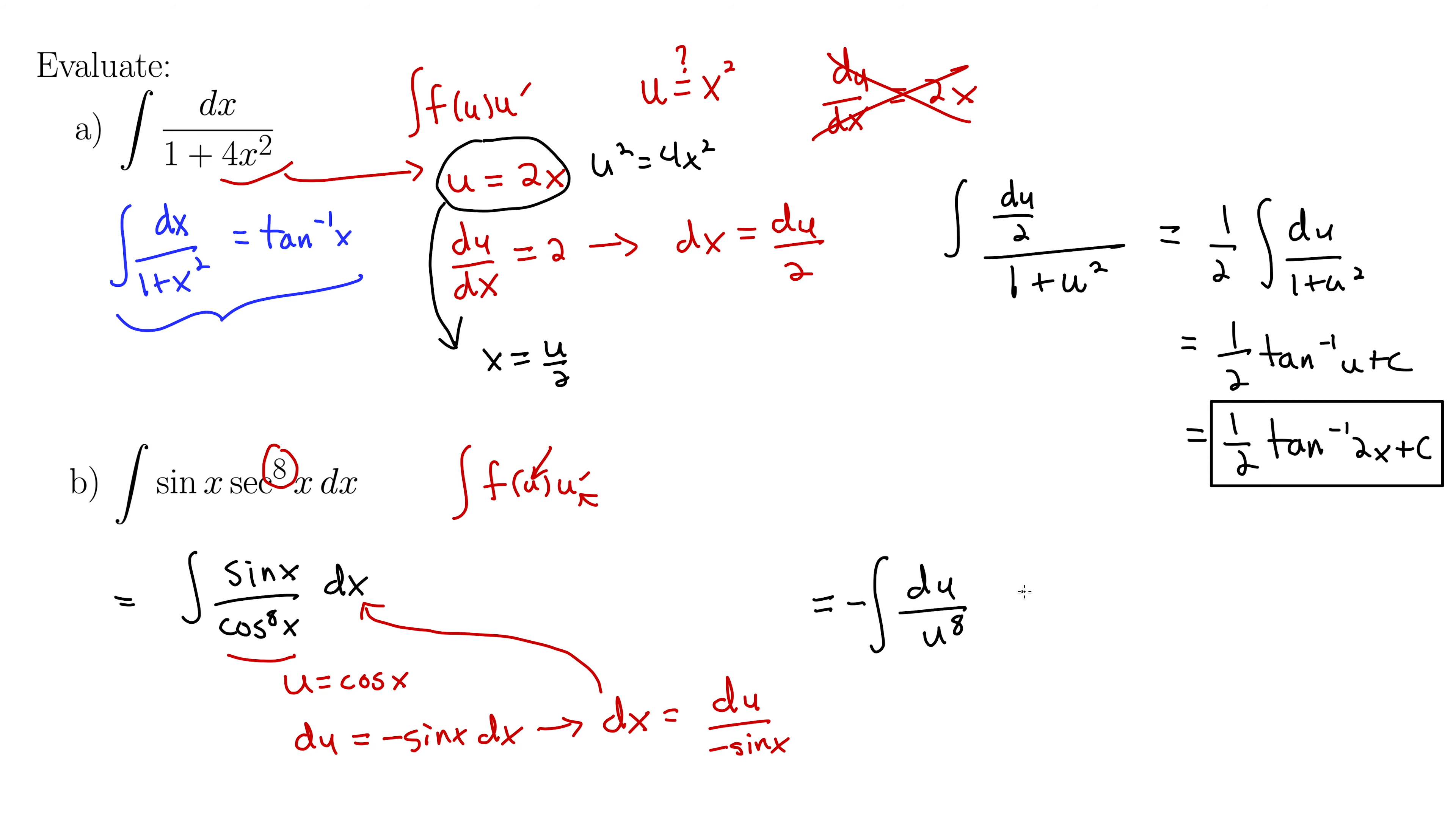Well now we'll use the power rule for integrals. So let's rewrite this as u to the negative 8 du. And remember when we go to evaluate an integral like this, you add 1 to the power and then divide by that new power. So we have negative u to the negative 7, I added 1, all over negative 7 plus c.